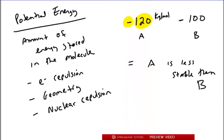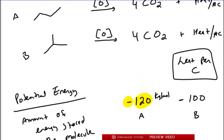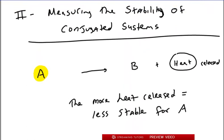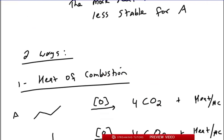So this is one way to figure out the stability of a system. Now it turns out that in conjugated systems, which is what we care about, the second way - and the one that we're going to focus on - is heat of hydrogenation.